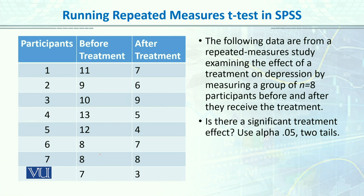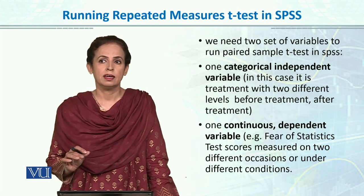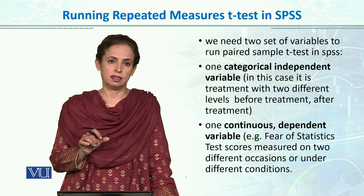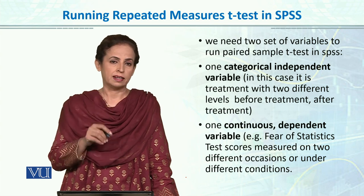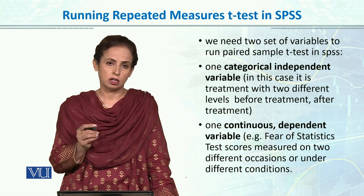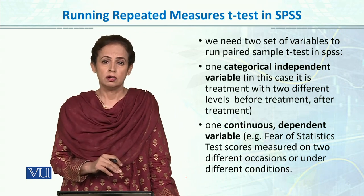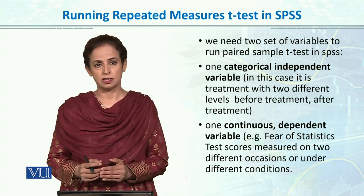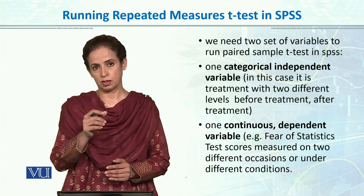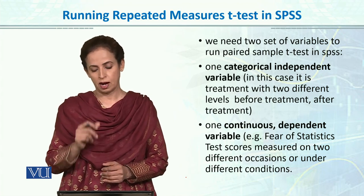There are eight participants. Pre- and post-testing was given — before treatment, what was their score, and after treatment, what was their score on depression. For the repeated measures T-test, we need two sets of variables. We need to keep the before column and the after column separately.